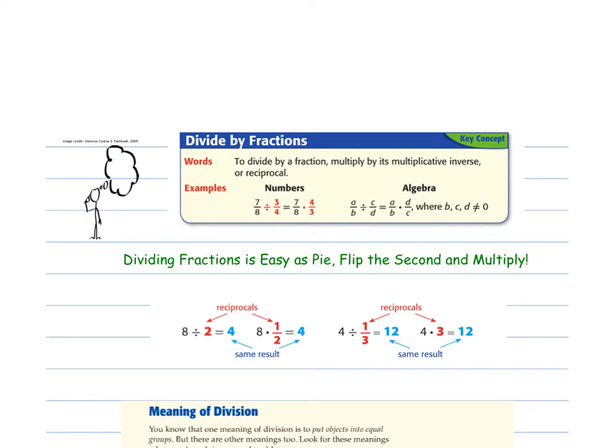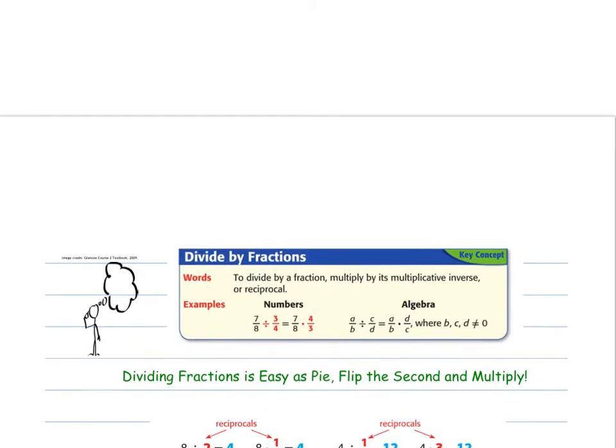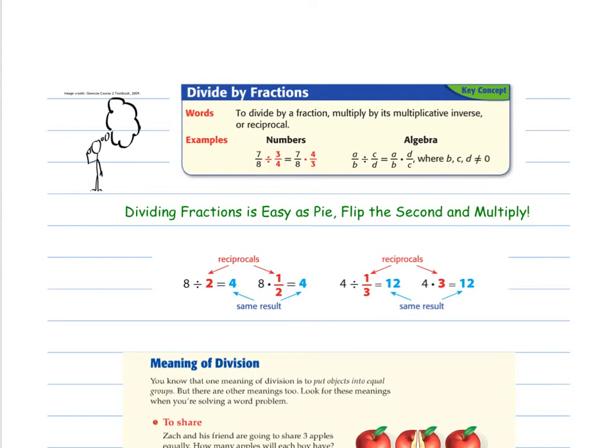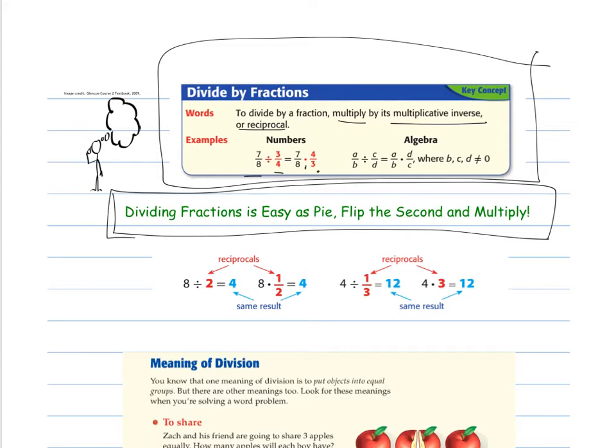So knowing our reciprocal or multiplicative inverse, now we can know how to divide fractions. So dividing fractions, here is your key concept. To divide fractions, what we do is we multiply by the multiplicative inverse or reciprocal. So seven-eighths divided by three-fourths is really the same as multiplying by four-thirds, multiplying by the reciprocal. That's where this little tune comes in handy. Dividing fractions is easy as pi, flip the second and multiply. So flipping the second number to its reciprocal and multiplying those two numbers together.